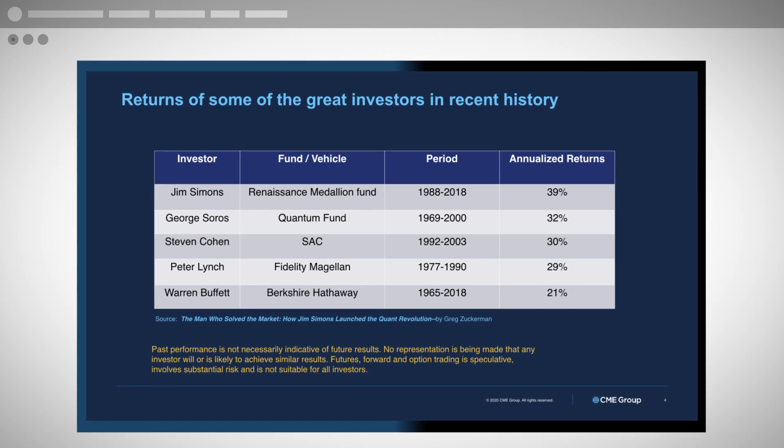When new traders ask what kind of returns they can expect, I say that depends on how much homework and experience they're willing to gain. From the book 'The Man Who Solved the Market' by Greg Zuckerman, here are some great investors: Jim Simons of Renaissance Technologies' Medallion Fund had 39% annualized returns from 1980 to 2018. George Soros got 32% annualized returns between 1969 and 2000. Stephen Cohen of SAC got 30% between 1992 and 2003. Peter Lynch got about 29% running Fidelity Magellan from 1977 to 1990. Warren Buffett's 21% return doesn't look as impressive, but he's done it for about 50 years — that's what sets him apart.